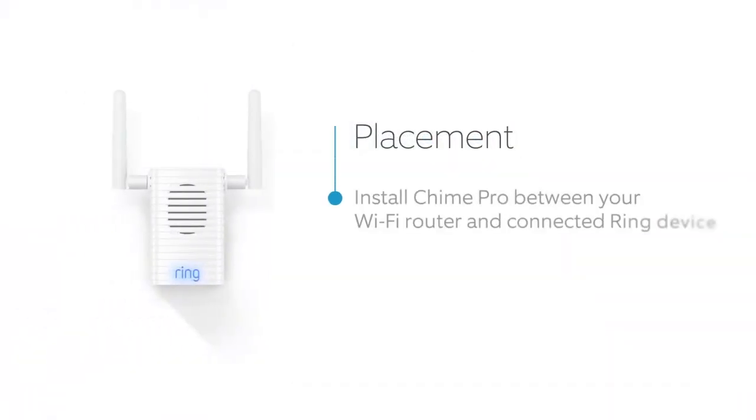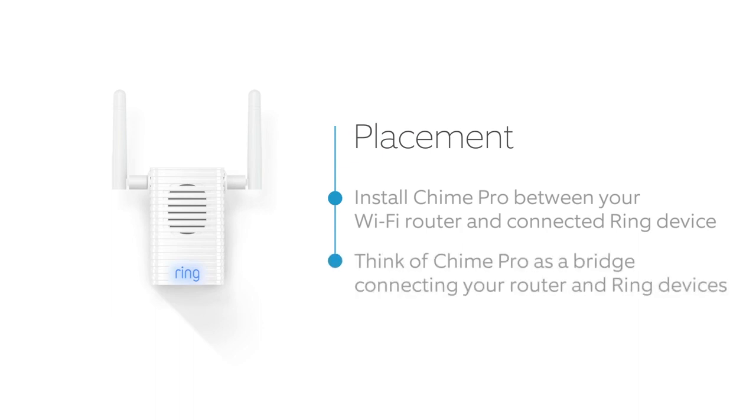For the best Wi-Fi performance, install Chime Pro somewhere between your Wi-Fi router and your connected Ring products. Think of Chime Pro as a bridge, filling the gap between your router and your Ring devices.